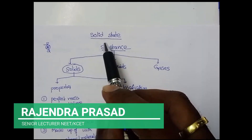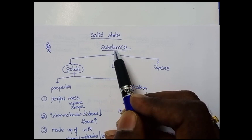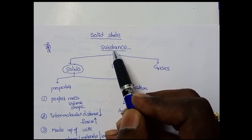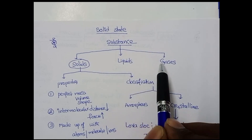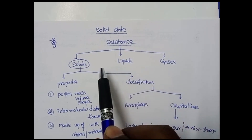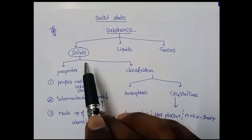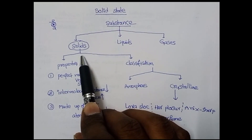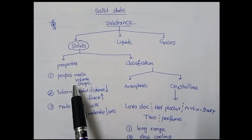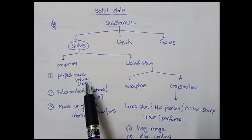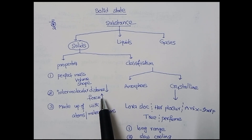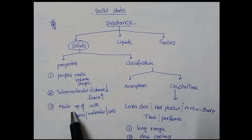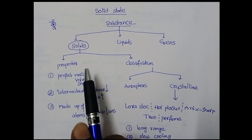We are going to discuss solid state. Substances are classified into three types based on physical states: solids, liquids, and gases. Our chapter is solid state. The main properties of solids are: they have definite mass, definite volume, and definite shape. The intermolecular distance is very less and the intermolecular forces are very strong. Solids are made up of atoms, molecules, and ions.